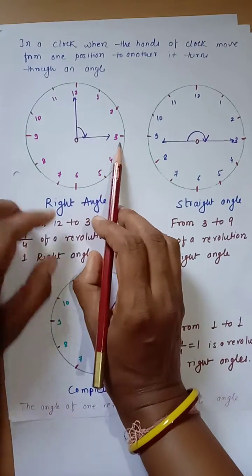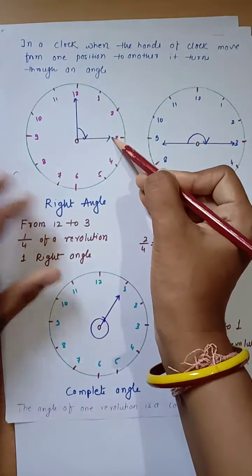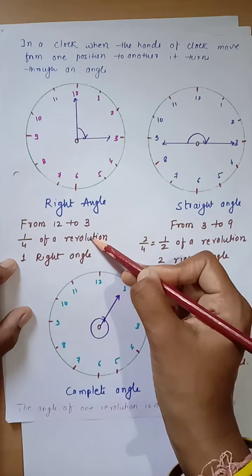This clock is divided into 4 part. See 1, 2, 3, 4. So it cover only 1 part. So one-fourth of the revolution.